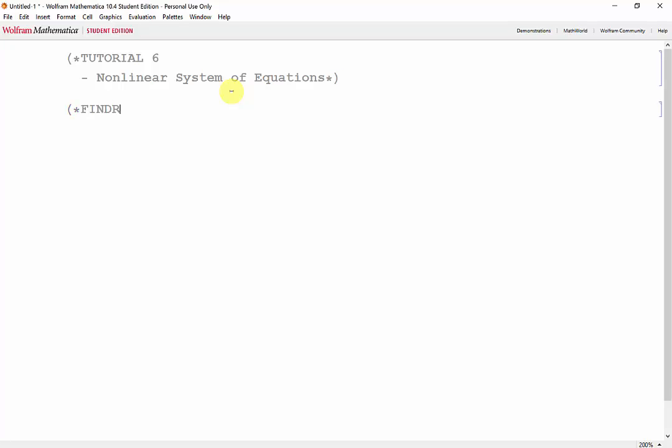As we learned previously, the FindRoot built-in function utilizes the Newton-Raphson method. If we wanted to use it to solve systems of nonlinear equations, the syntax would be FindRoot, a vector containing the expressions and the respective values that they are equal to, and so on.